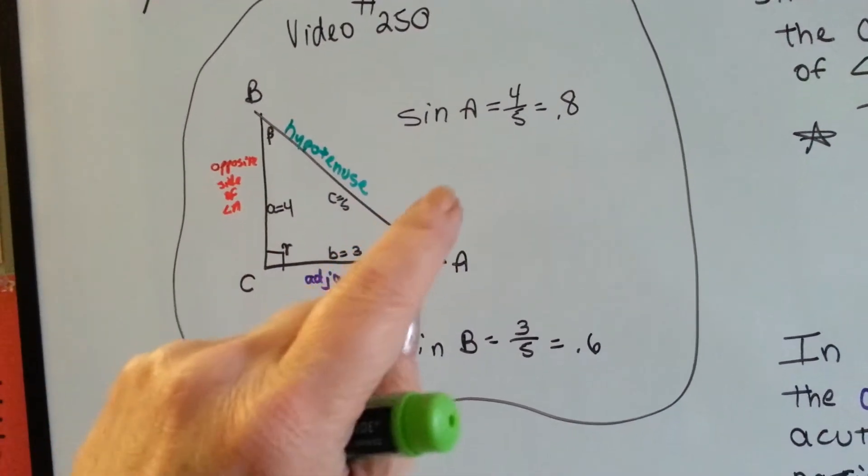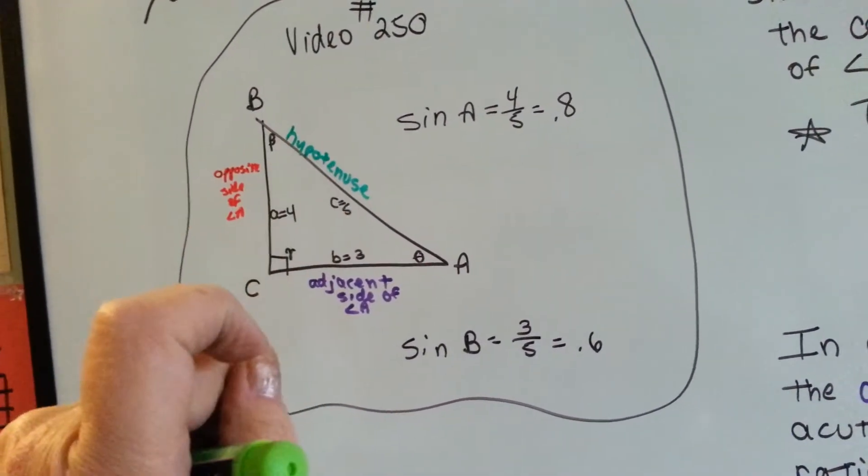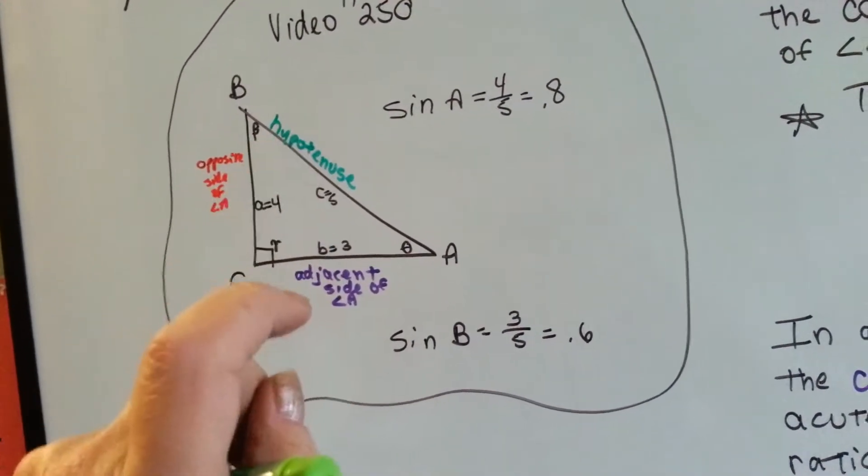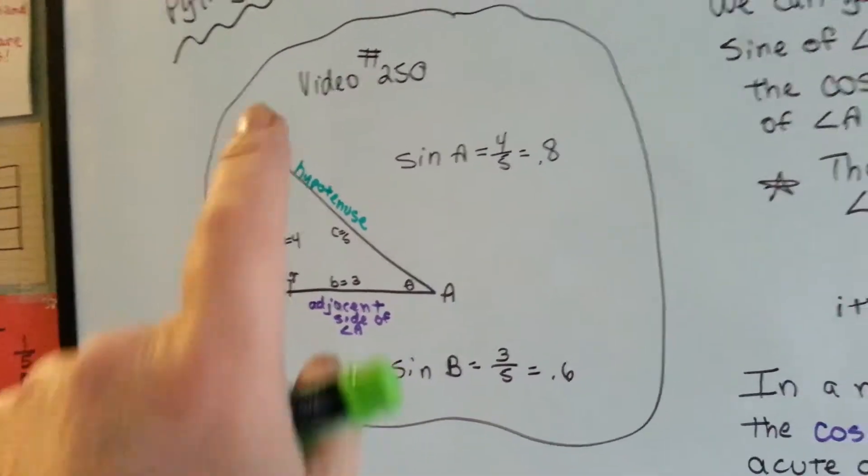Sine A is the 4 over the 5, the opposite over the hypotenuse, and sine B is the adjacent over the hypotenuse. So it's 3 over 5, where this is 4 over 5. That's what we were doing in 250.